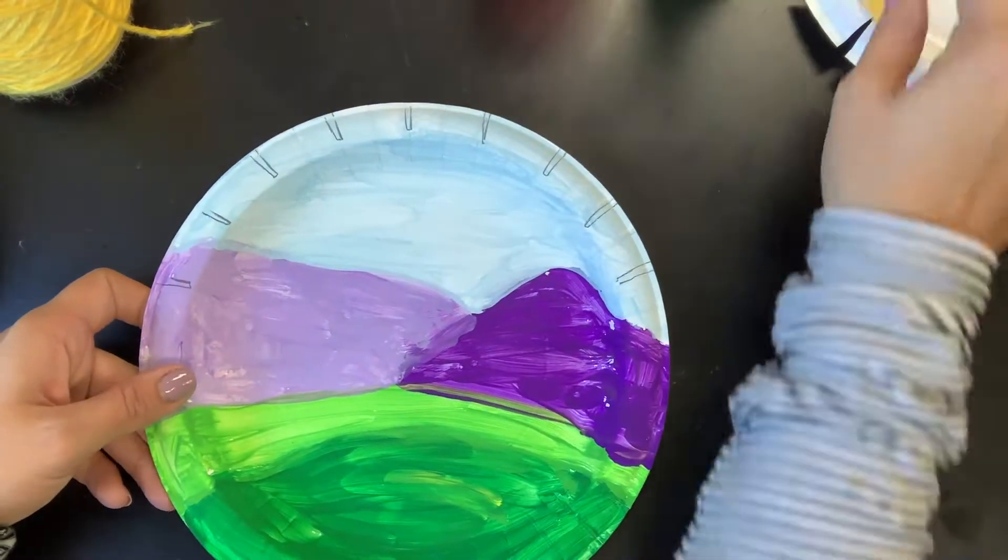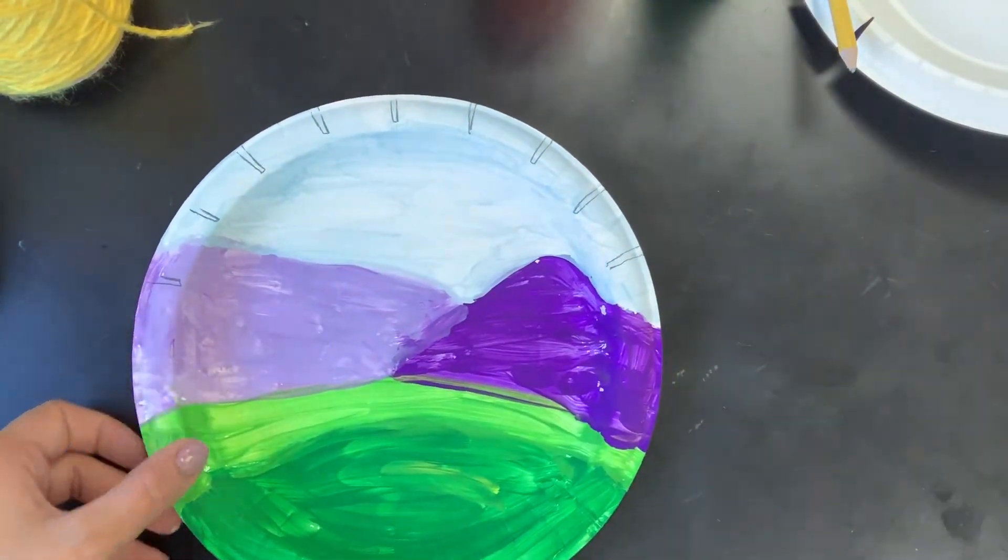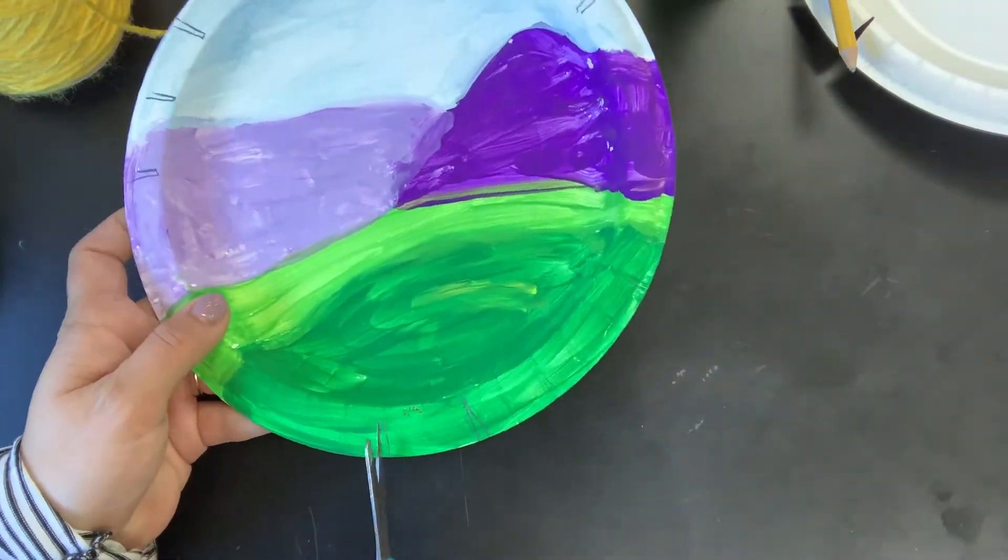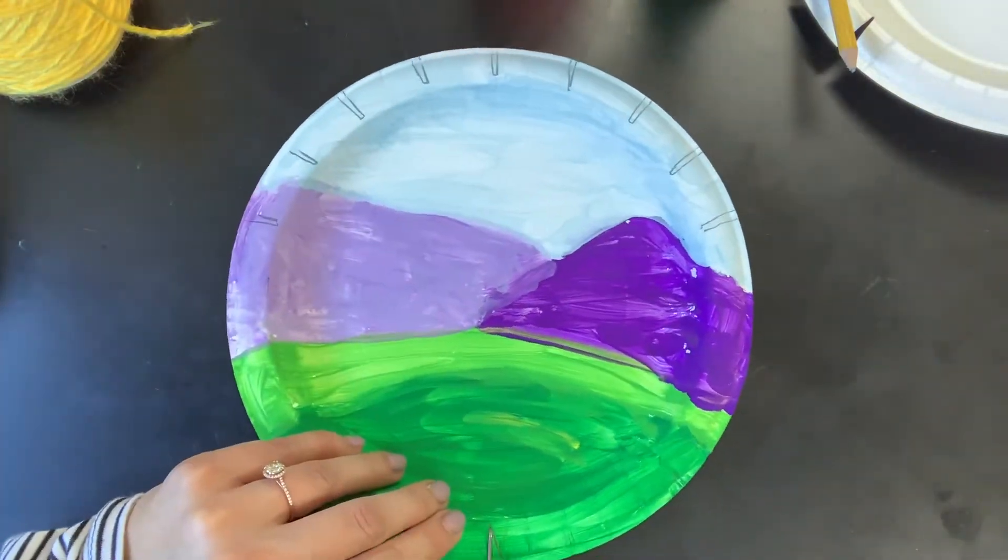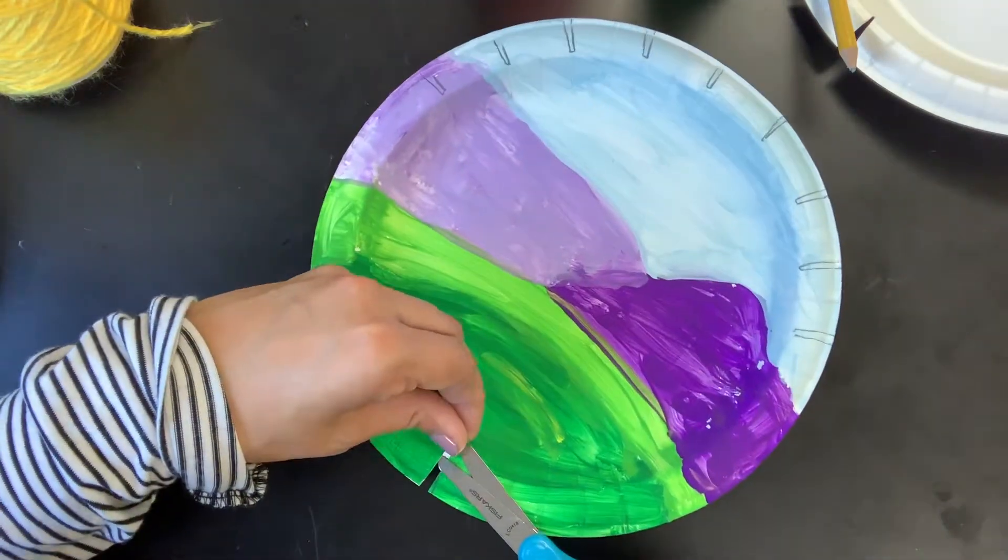Before you actually cut, double check that the one with all the notches is at the top and the one with two notches is at the bottom. Then cut out each one.